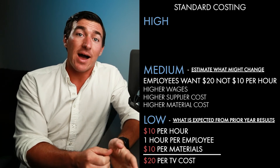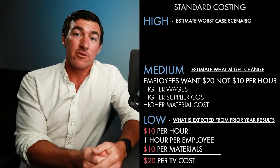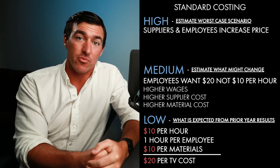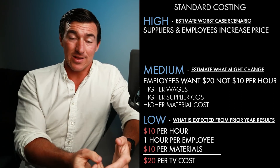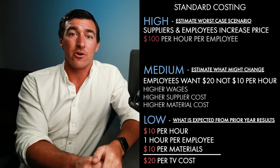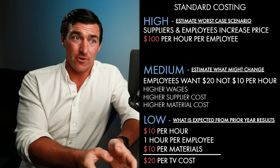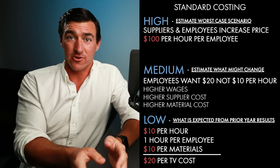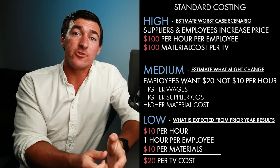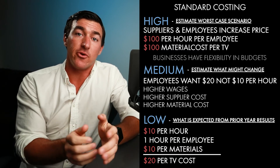The high category is the worst-case scenario. What if both my suppliers and my employees really ratcheted up the price on me? Let's say employees said they're only working for $100 an hour, or suppliers said they're only going to sell materials at $100 per TV. That's going to be a big change. Due to those changes, you have to be able to understand that businesses need flexibility in their budgets.